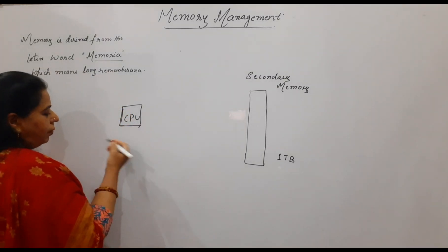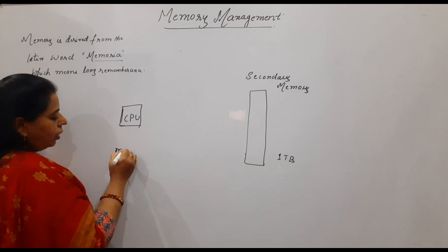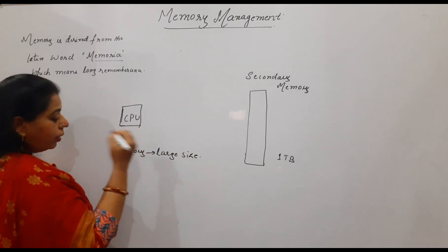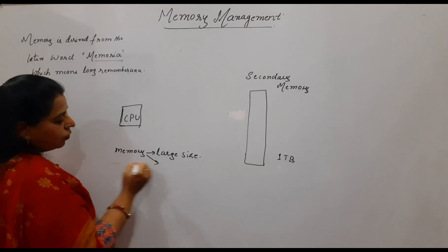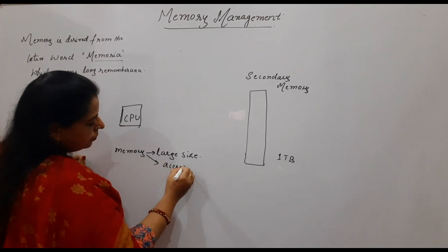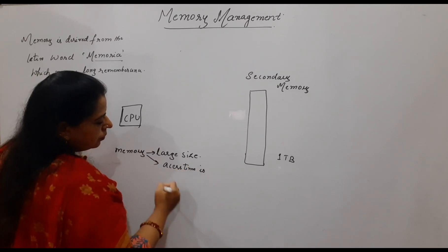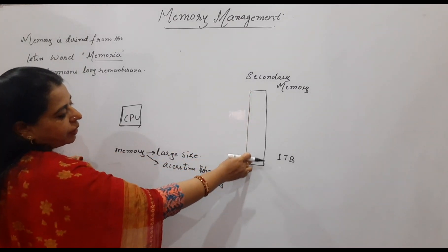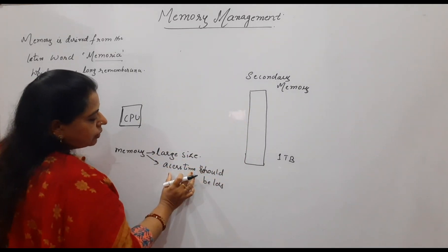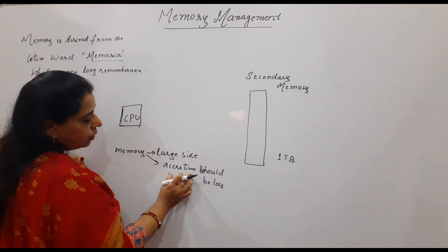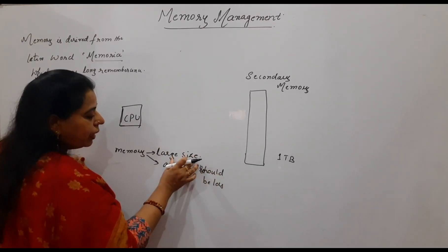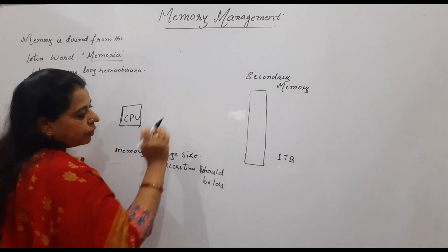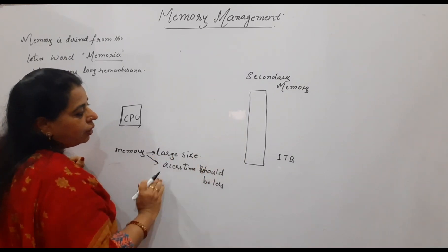What any user wishes to have is a very large memory space — that is the large size. But at the same time, the other desirable feature we want is that the access time should be less. To access any particular instruction from the secondary memory, the CPU has to do so in a very, very less amount of time. These two things are quite contradictory: the more is the size, the more time is spent to search a location; the lesser the size, the lesser the time spent.